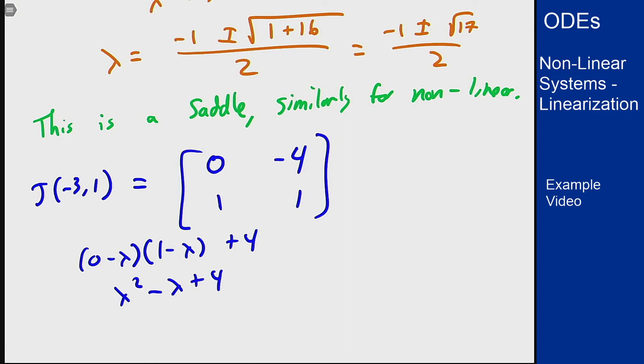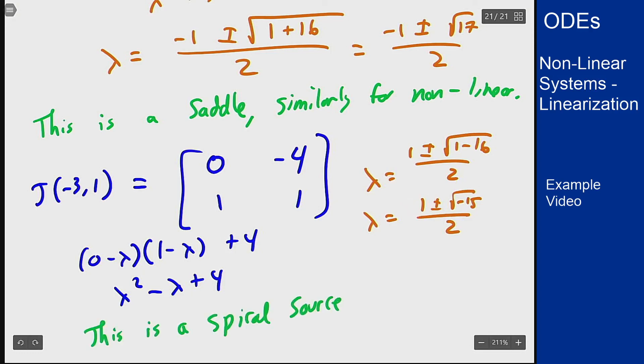Again doesn't factor nicely so the quadratic formula tells us that lambda should be 1 plus or minus the square root of 1 minus 16 over 2 which is 1 plus or minus the square root of negative 15 over 2. So this is going to be a spiral because of the complex value and because this real part is positive it's going to be a spiral source. And so will the nonlinear system.